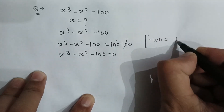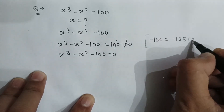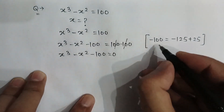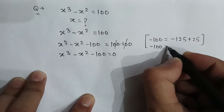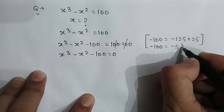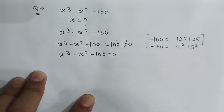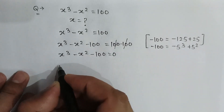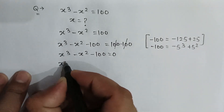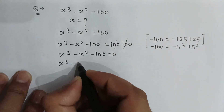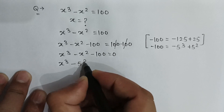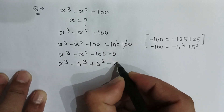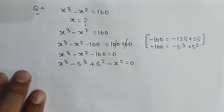As we know, we can write minus 100 as minus 125 plus 25, or equivalently as minus 5 cube plus 5 square. So we can rewrite the equation as x cube minus 5 cube plus 5 square minus x square is equal to 0.